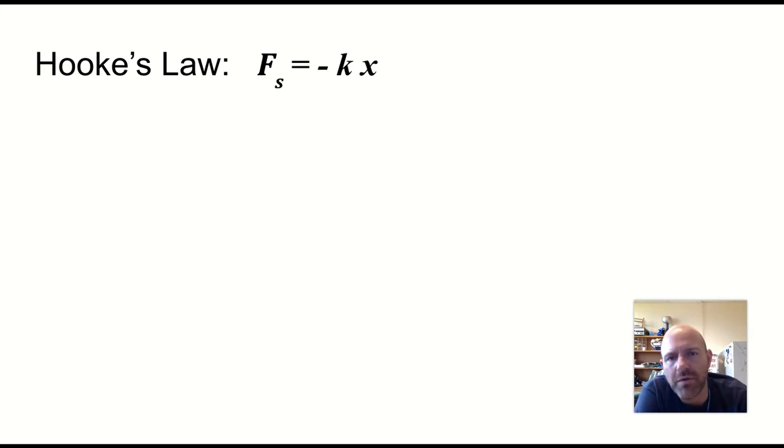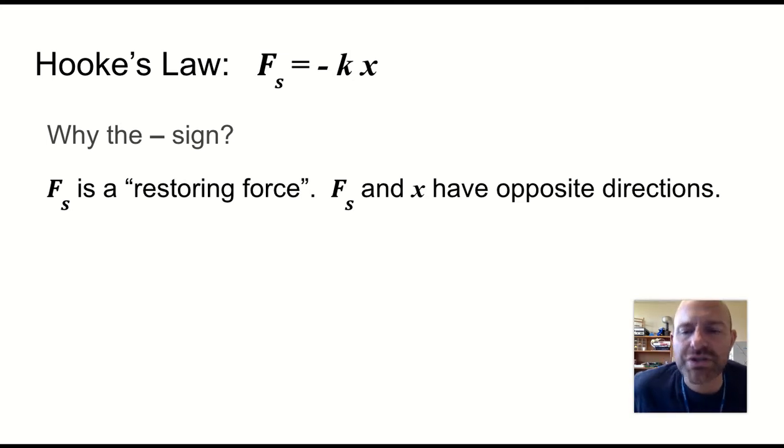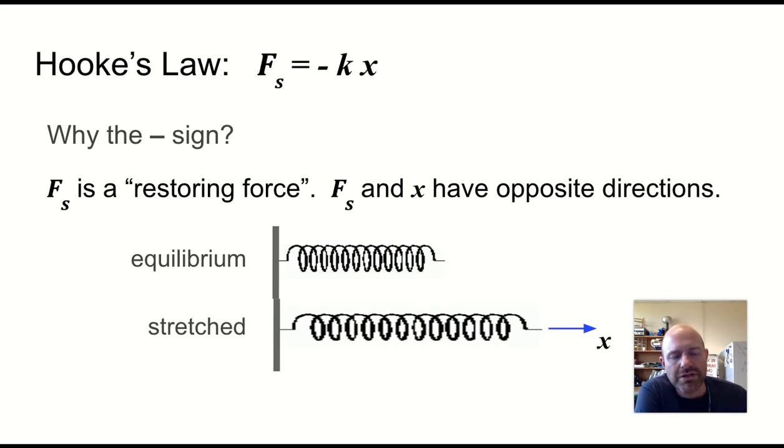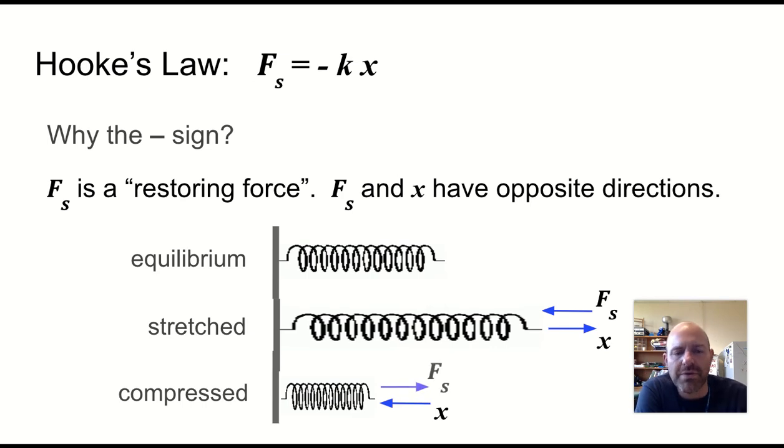So Hooke's law, spring force is equal to negative kx. What is the negative sign about? It is all about this concept of a restoring force. And the spring force is not the only force that is a restoring force. There are other forces that behave this way. But it always wants to bring it back toward equilibrium. The spring force and x have opposite directions. You pull to the right, the spring force is to the left. You displace it to the left, the spring force is to the right, or up and down, and so on. So if this is equilibrium, an unstretched spring just lying there, if you pull it stretched to the right, you get a spring force to the left. If you compress it to the left, you get a spring force to the right. That's how Hooke's law, how springs behave.